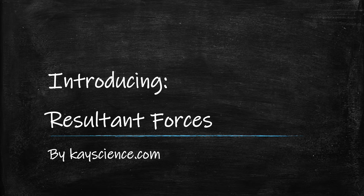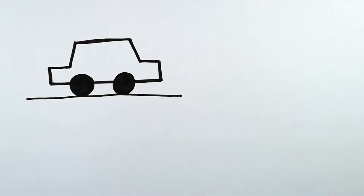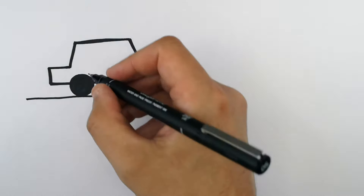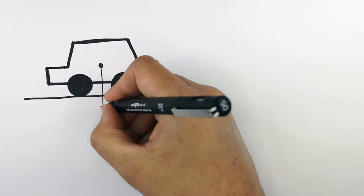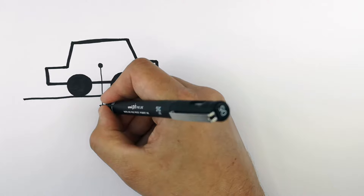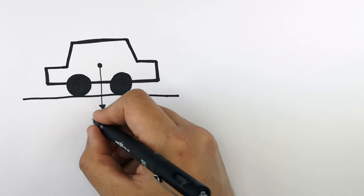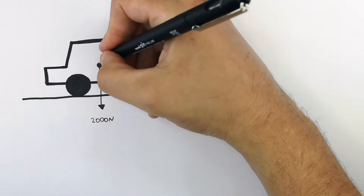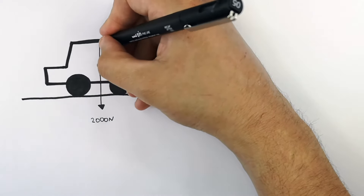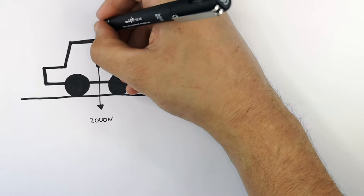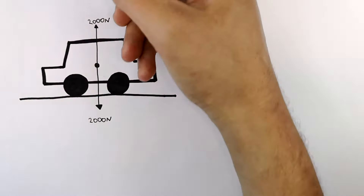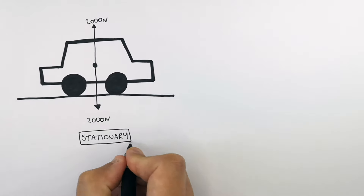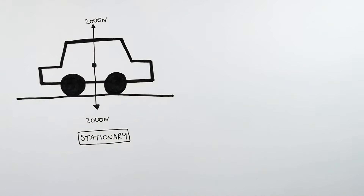Introducing Resultant Forces by Kscience.com. This car is stationary. It's currently got a force acting downwards due to the gravitational field strength acting on the car's mass, and this weight is 2,000 newtons. The equal and opposite force of the car's weight is 2,000 newtons going upwards. This car is stationary because there is no driving force.